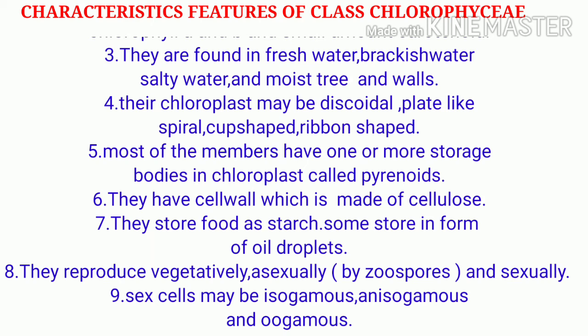Most members have one or more protein-rich storage bodies in their chloroplasts, called pyrenoids. They have a cell wall made of cellulose. They store food as starch — most green algae store food in the form of starch, but some also store it in the form of oil droplets.